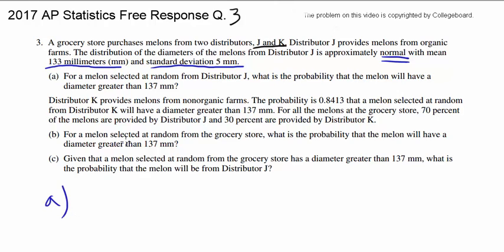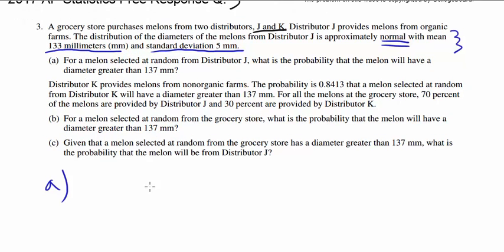And now we got part A. For a melon selected at random from distributor J, which was just described up top, what is the probability that the melon will have a diameter greater than 137?